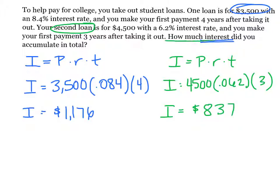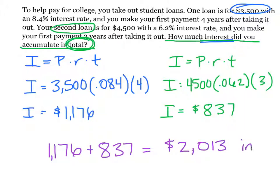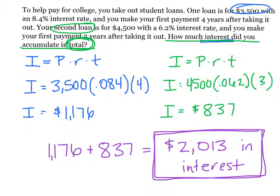Now we want to find how much interest did we accumulate in total. So total, we're going to add them up. Interest on our first loan of $1,176 plus interest on the second loan of $837 gives us a grand total of $2,013 in interest. And that is why when you take out a loan, you want to pay it back as quickly as possible so that you will have the least amount of extra money or interest to pay off on it.